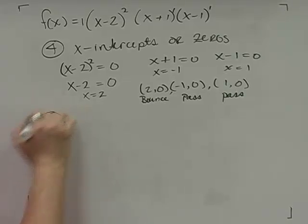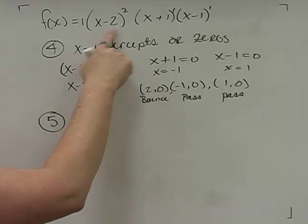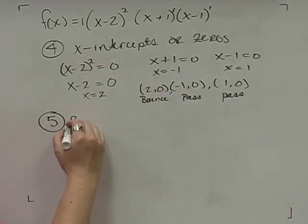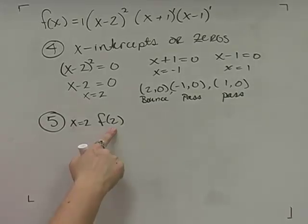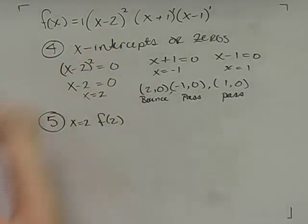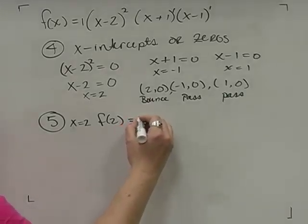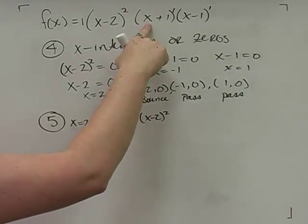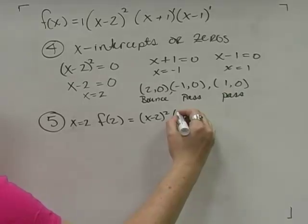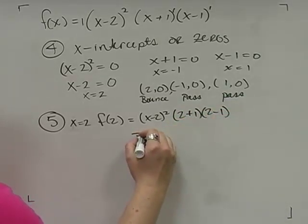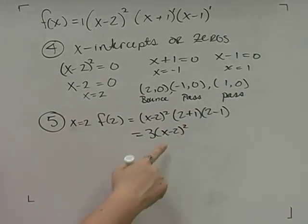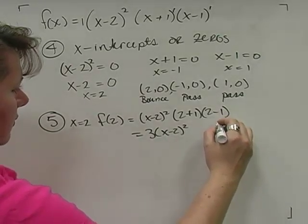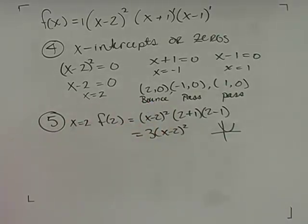Step 5 confirms the bounce/pass behavior by analyzing local behavior near each zero. For x equals 2, substituting into the other factors gives f near 2 approximately equal to 3 times 1 times (x minus 2) squared, which is a quadratic shape — confirming a bounce. For x equals negative 1, the other factors give (negative 3) squared times (negative 2) equals negative 18, so near x equals negative 1 the function behaves like negative 18(x plus 1) — a line with negative slope, confirming a pass-through.